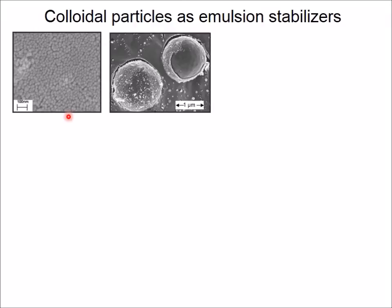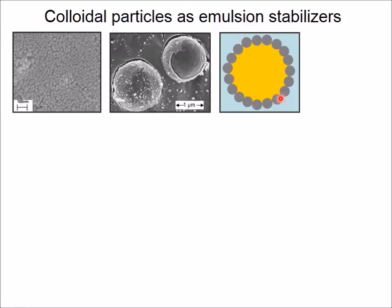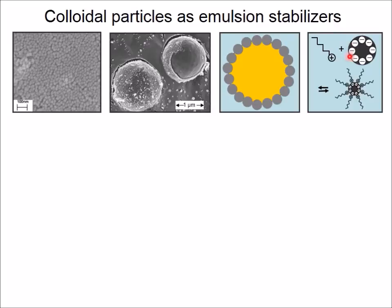In the next electron micrograph, we see two oil droplets. These two oil droplets have been stabilized by these silicon dioxide particles. The particles form a dense crust on the surface of the droplets. This crust hinders two droplets from fusing with each other, which we call coalescence.